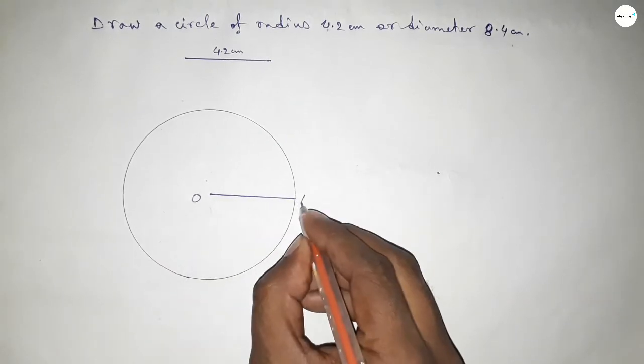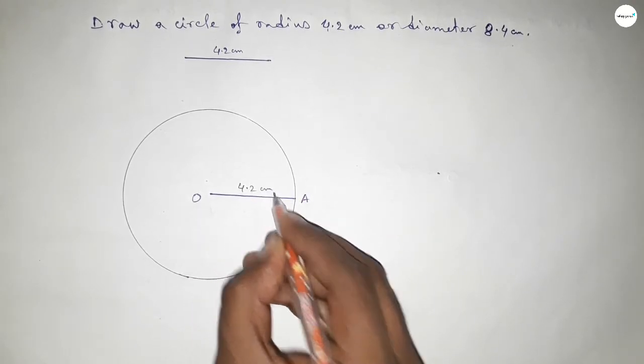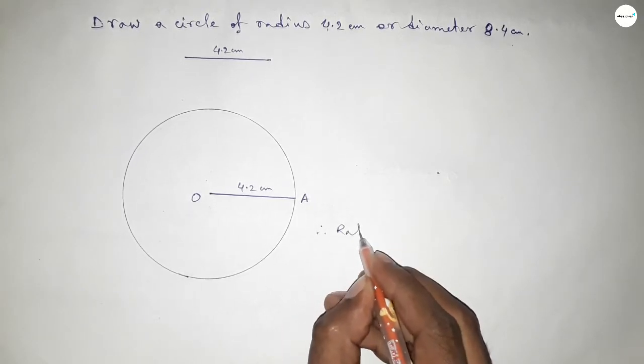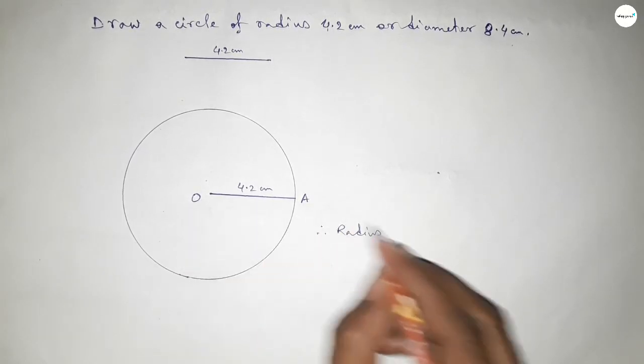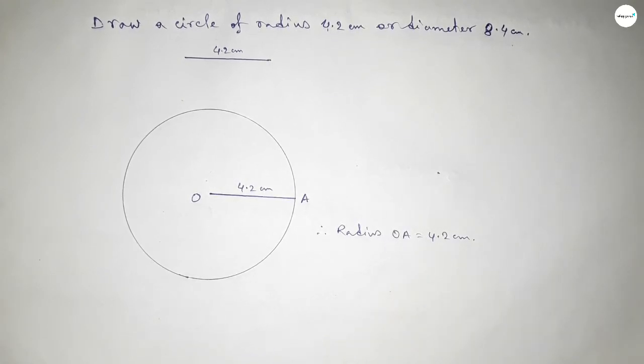Taking here the center O and here a point A, where OA equals 4.2 centimeters. Therefore, radius OA equals 4.2 centimeters. That's all. Thanks for watching. If this video is helpful to you, then please share it.